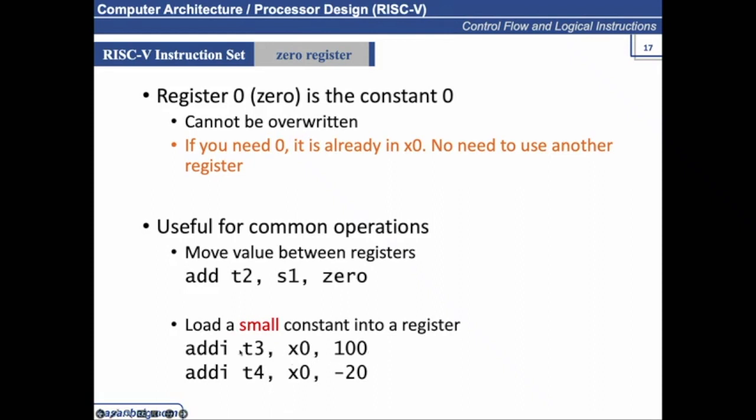So addi, immediate value, you are using x0, which is the x0 register. You are adding it to 100 to make the actual value 100, and assigning it to t3. So basically what you are doing is you are initializing t3 with a value 100.